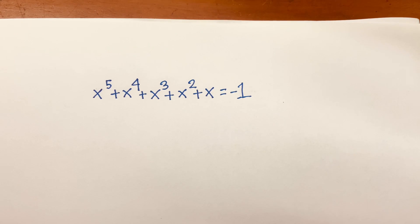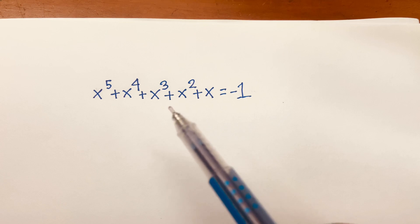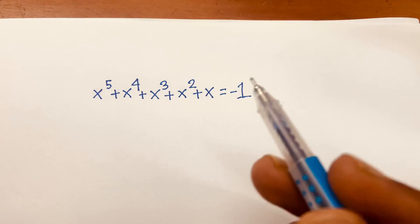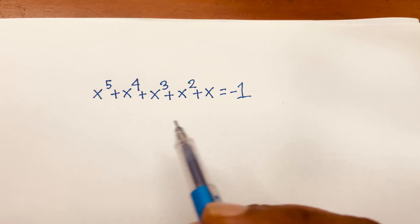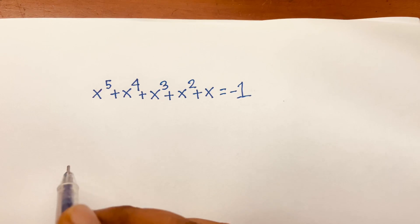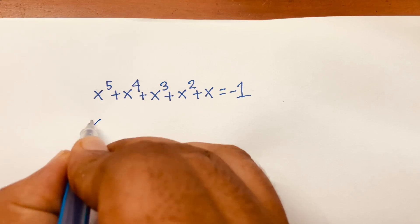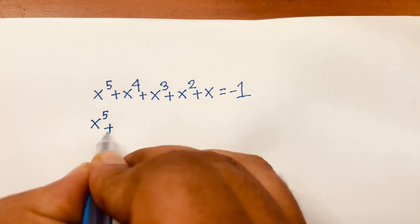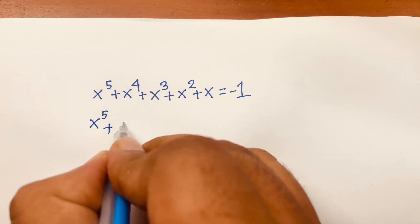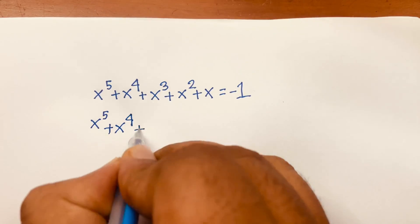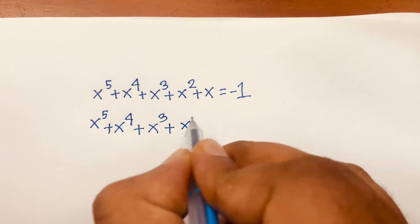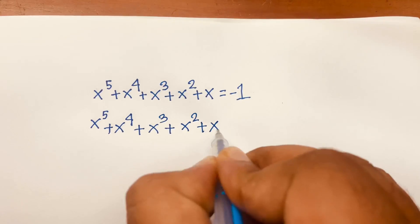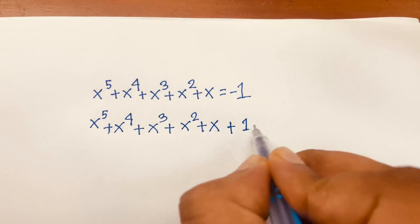How to solve this Chinese Math Olympiad question: x to the power 5 plus x to the power 4 plus x to the power 3 plus x squared plus x is equal to minus 1. We'll find out the value of x in this equation. First, I can rewrite it as x⁵ + x⁴ + x³ + x² + x + 1 = 0.